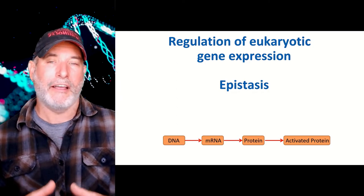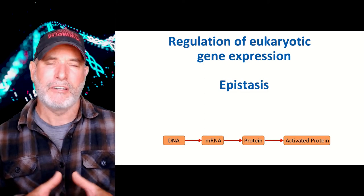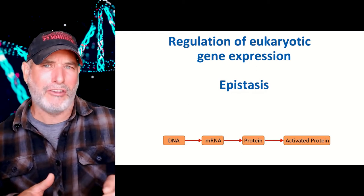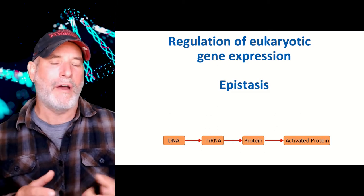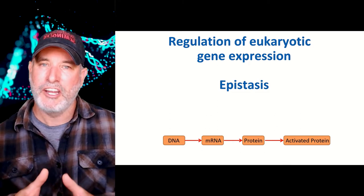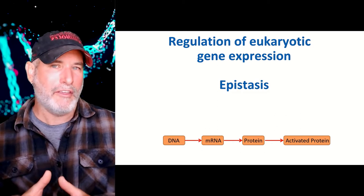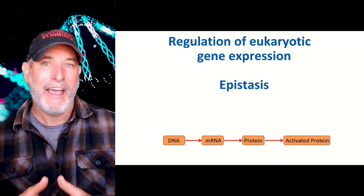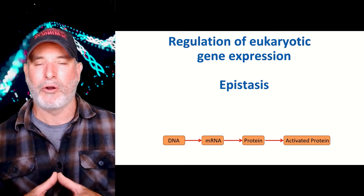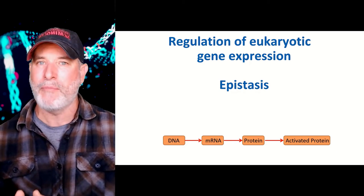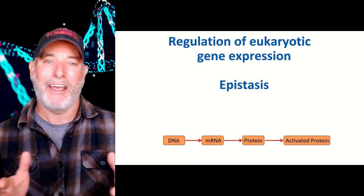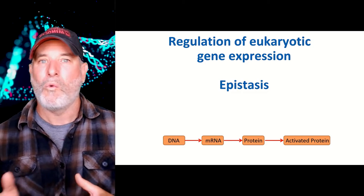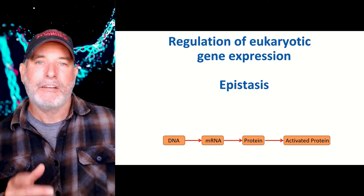Cells need to regulate when genes turn off and when they turn on. Those on-and-off switches don't always work that simply — sometimes it's like a volume knob where you can ramp down gene expression or turn it all the way up. Gene expression is the flow of information from DNA to protein: DNA holds the information, we transcribe it into messenger RNA, then translate the mRNA into a protein. Regulating gene expression means controlling when we make those proteins and how long they last.